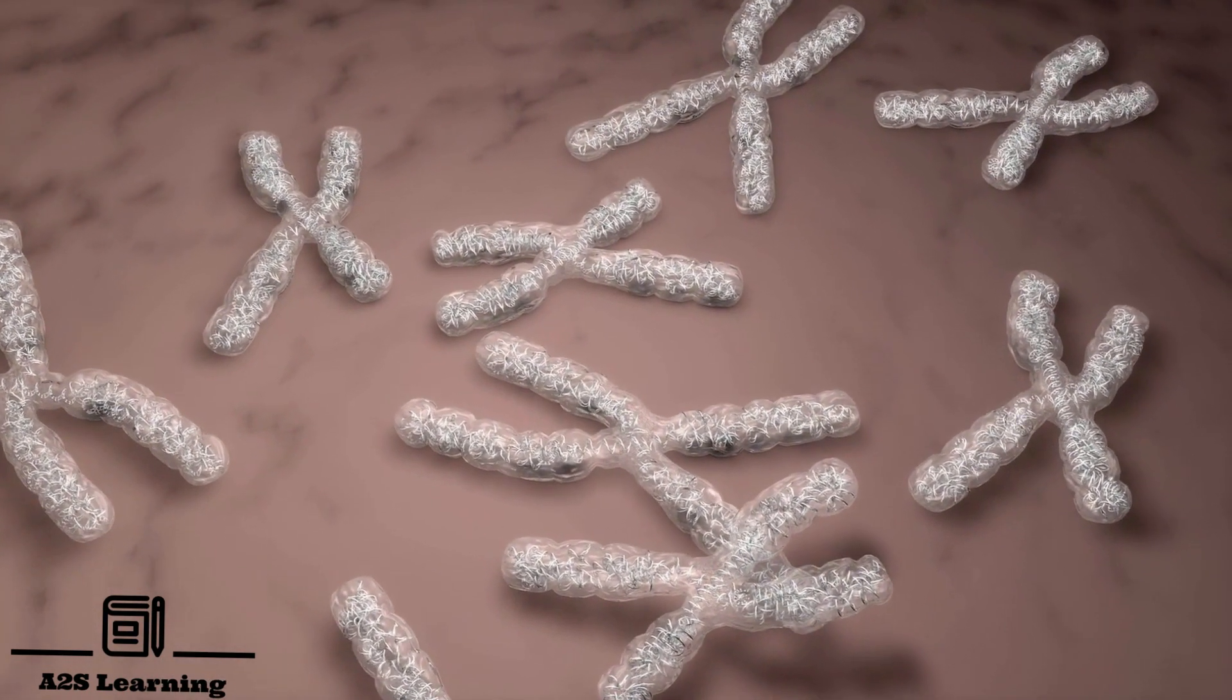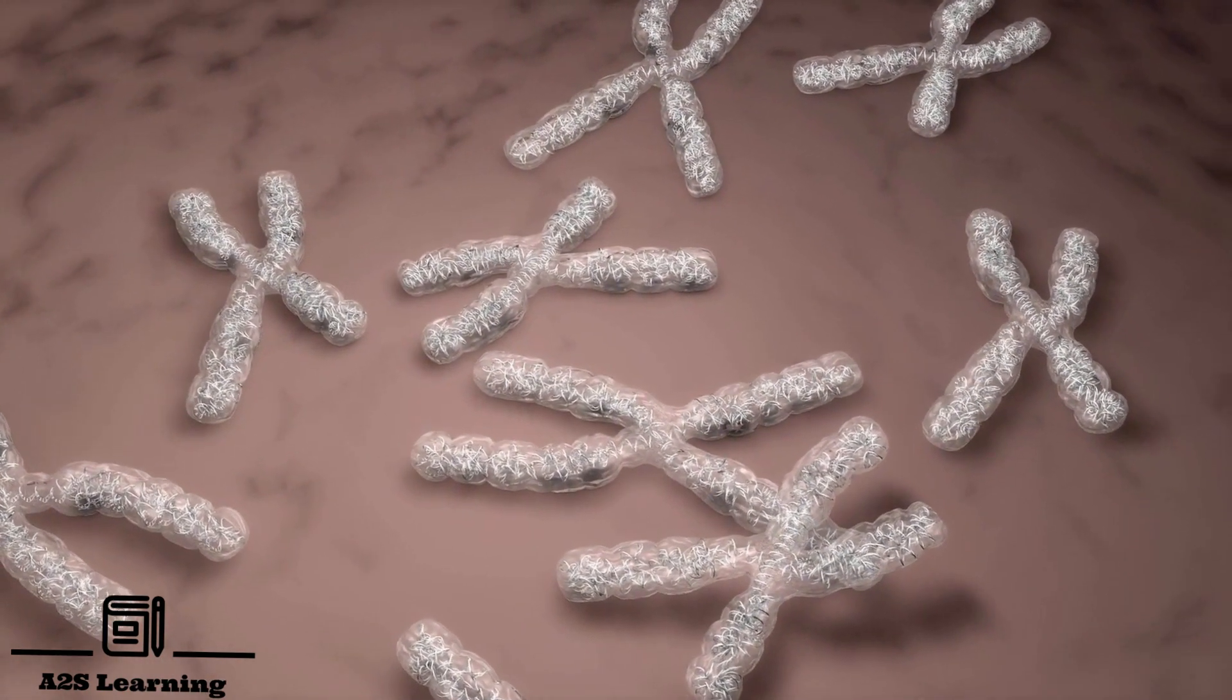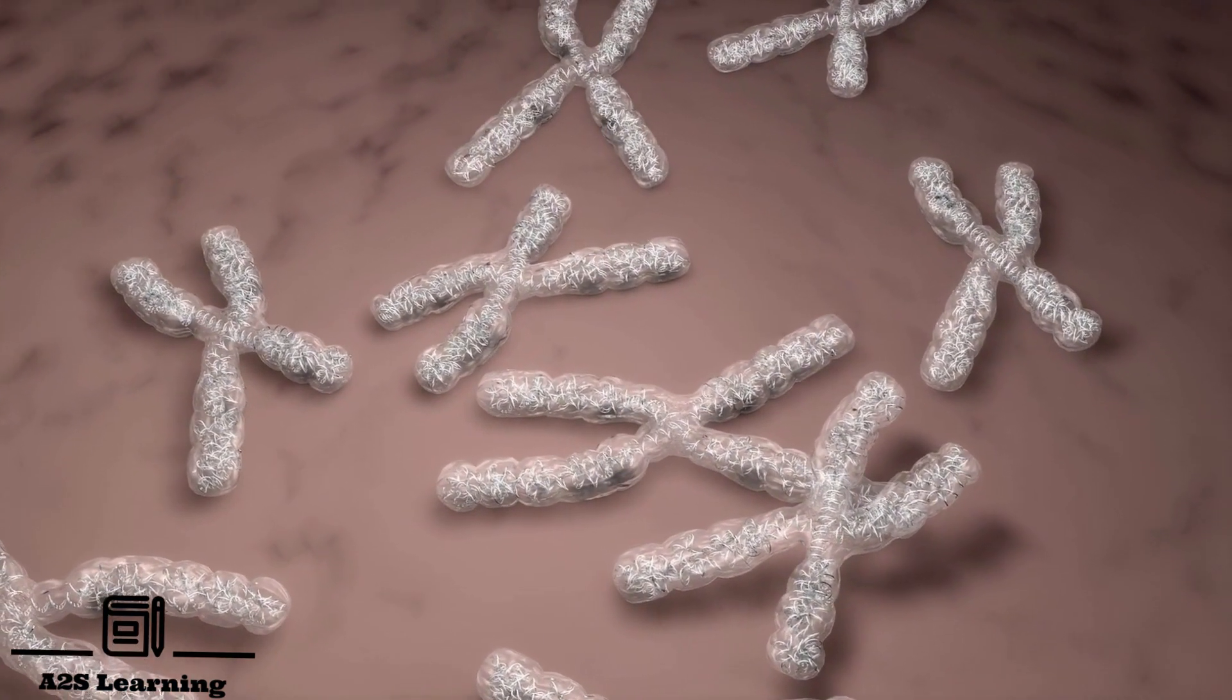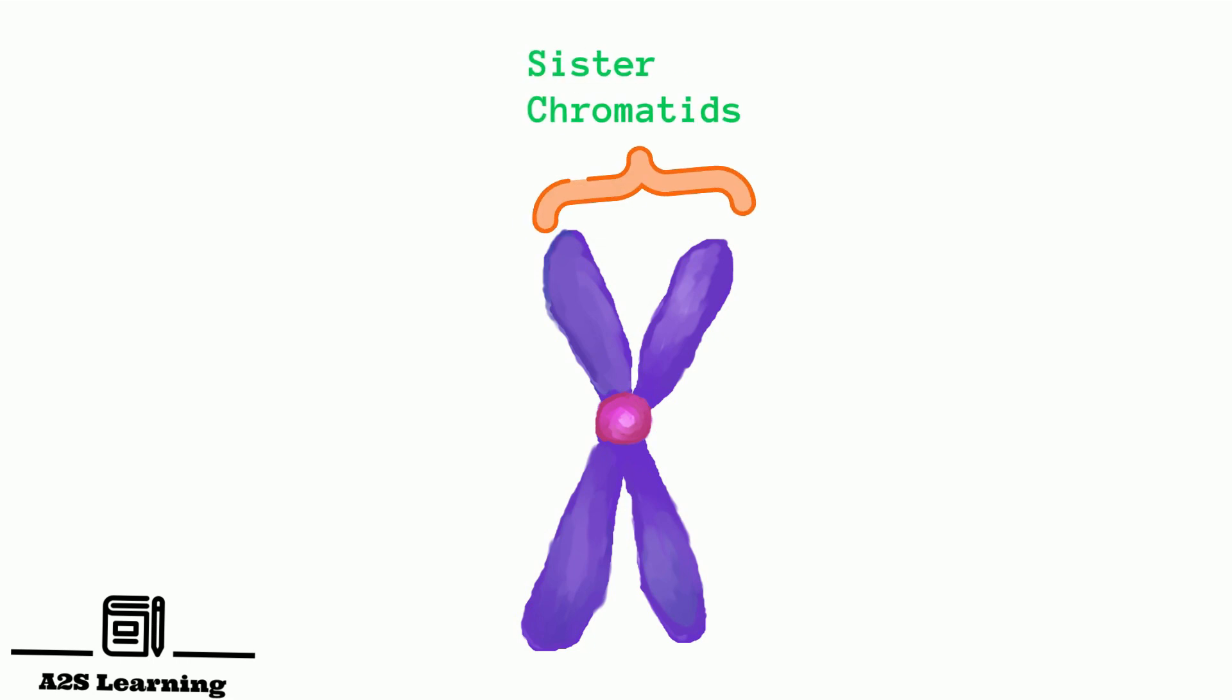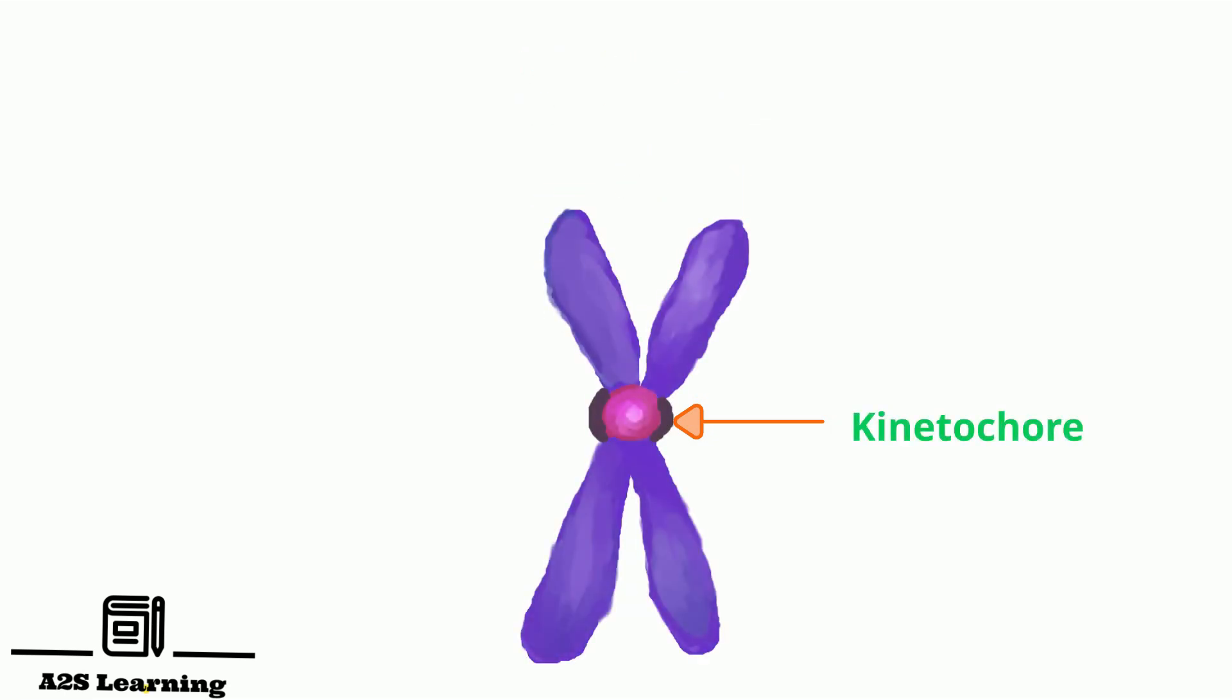Since DNA replication took place during S phase of interphase, each prophase chromosome consists of a pair of identical sister chromatids. A constricted region called centromere holds the chromatids paired together. Each centromere consists of a protein complex called kinetochore, which surrounds the centromere.